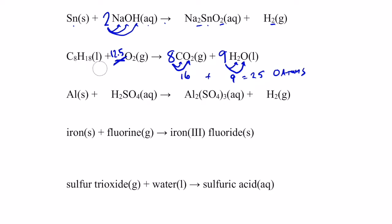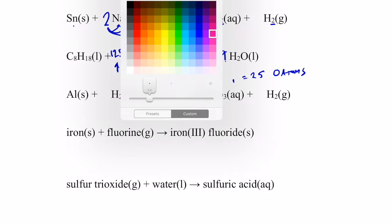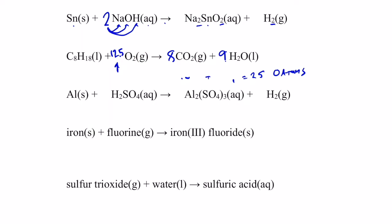I could make 12 and a half a whole number by doubling it. But if I double the number of O₂, I'd have to double the number of everything else in the equation for it to balance. So let's go ahead and double the oxygen — instead of 12 and a half, let's give ourselves 25 — and double everything else.